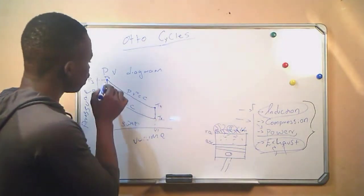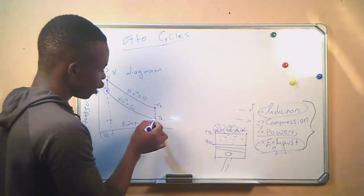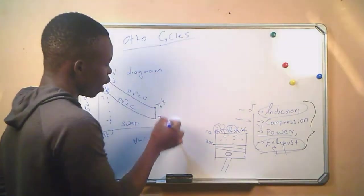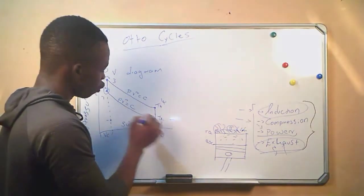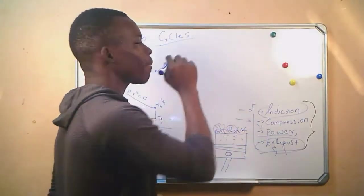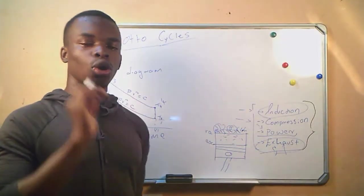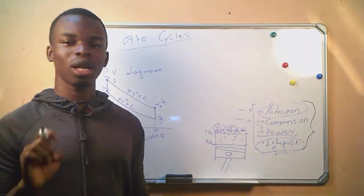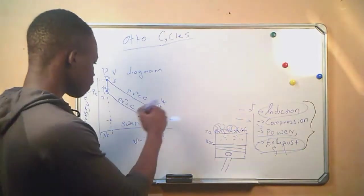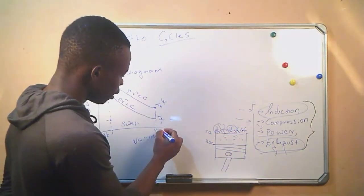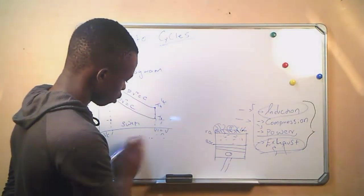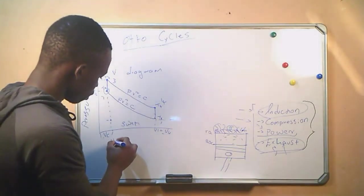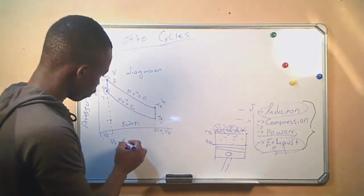Everything you need between points 1, 2, 3, and 4 — we are going to use the adiabatic law. Go to the thermodynamics table and use the formulas that correspond with the adiabatic law. So V1 equals V4, and V3 equals V2.